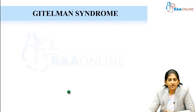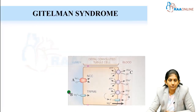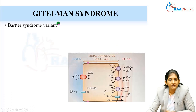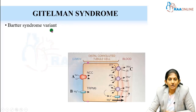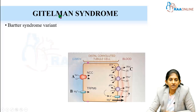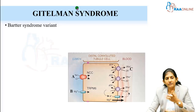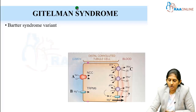Coming to Gitelman syndrome, this is another renal tubular transport defect taking place in the distal convoluted tubule. It is considered a variant of Bartter syndrome, but the presentation is late — it presents in adolescence or only in adulthood, and it is very subclinical with not many symptoms.